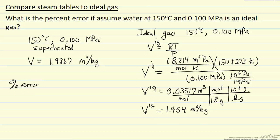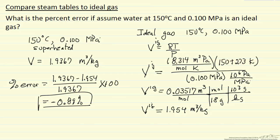Percent error would be the difference, steam tables value minus the ideal gas value over the steam table value. These are all units of cubic meters per kilogram, so they cancel, and we want percent, so I multiply by 100, and I get negative 0.89%, less than 1% error by assuming ideal gas for superheated steam at these conditions.